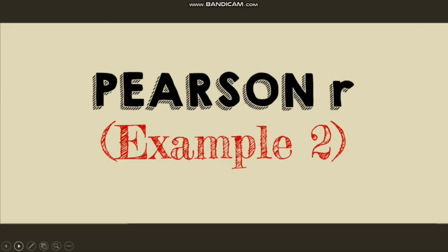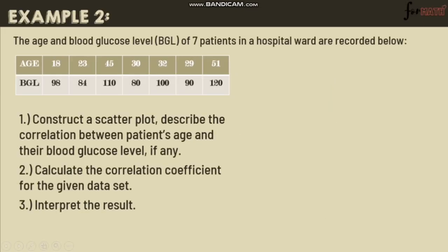Let's have another example. The age and blood glucose level (BGL) of 7 patients in a hospital ward are recorded. Age is the independent variable (X) and blood glucose level is the dependent variable (Y). Number 1: construct a scatterplot and describe the correlation. Number 2: calculate the correlation coefficient R and interpret the result.